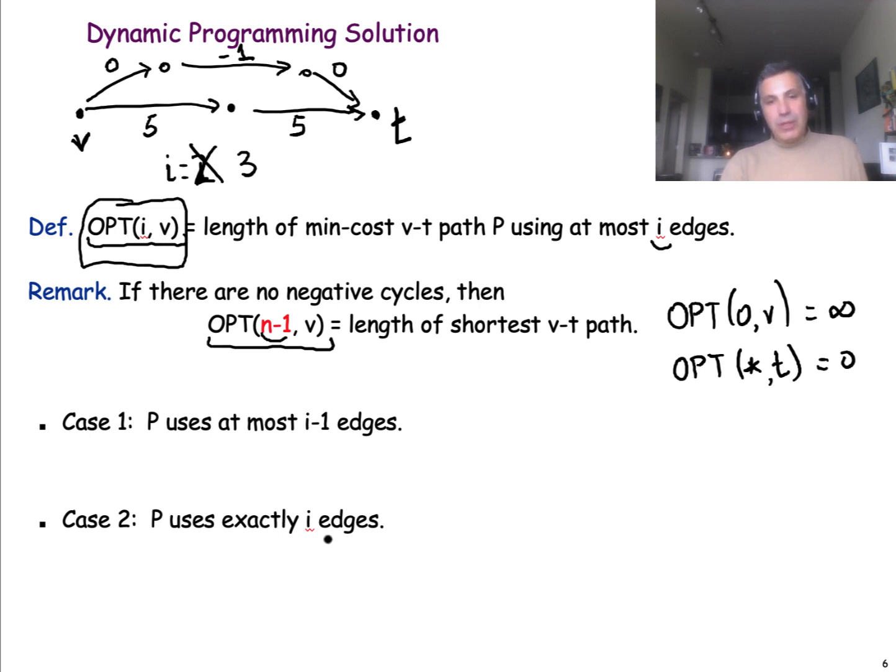Other than the base case, we can separate here two different cases. One case is that this minimum cost path to go from V to T actually includes at most I minus 1 edges. In that case, the solution of this problem is the same with the solution of this problem, because we know that the optimal path from V to T includes at most I minus 1 edges. So, even if we have one more edge, we're still going to use the same optimal solution that we had with I minus 1 edges.